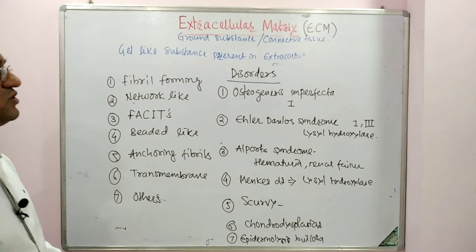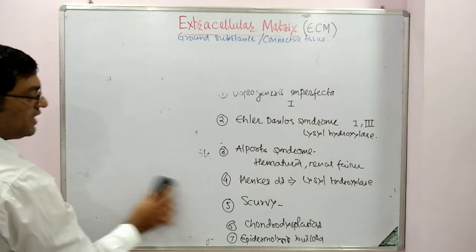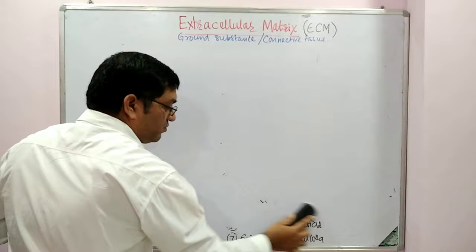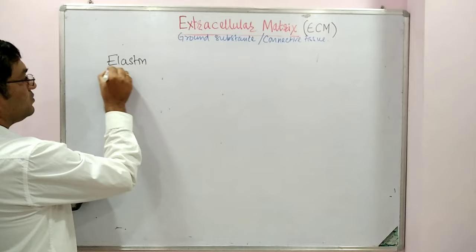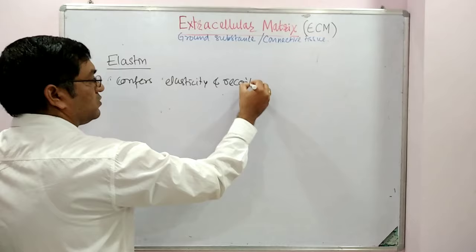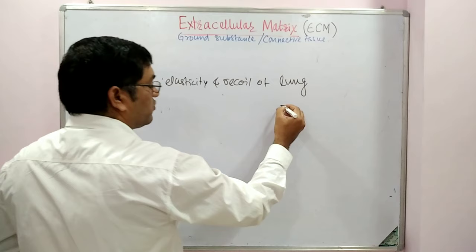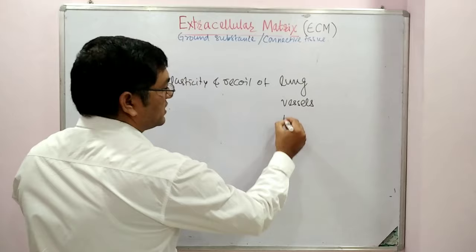Now coming to the second component of extracellular matrix — elastin. Elastin is present in elastic tissues and confers elasticity and recoil. It confers elasticity and recoil of lung, large vessels such as the aorta, and tendons.